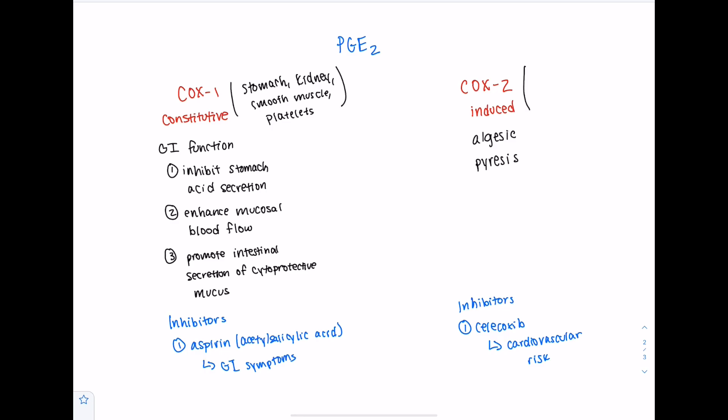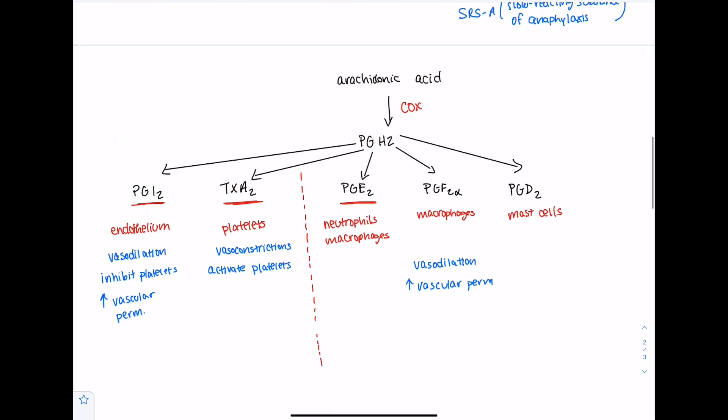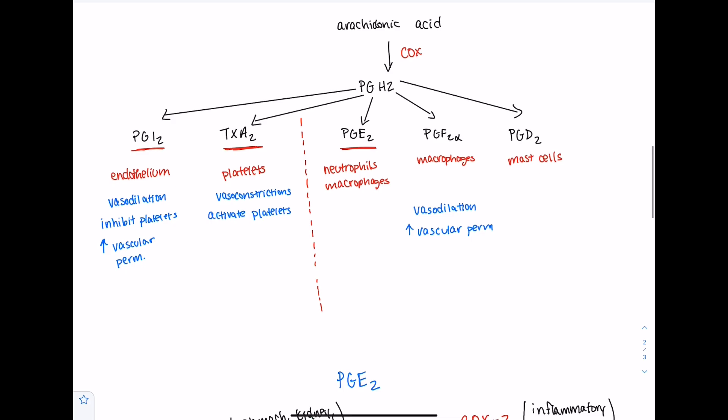Now COX2, like we said, is usually induced during inflammation. So you're going to see these in cells that are going to be involved in inflammatory responses. So we'll write inflammatory response. That's why PGE2 in its form is going to lead to this algesia and this pyresis that we were talking about earlier. And if you remember from an earlier video, we said that neutrophils are going to be producing PGE2, as well as macrophages, which are going to be the main cells during acute inflammation.